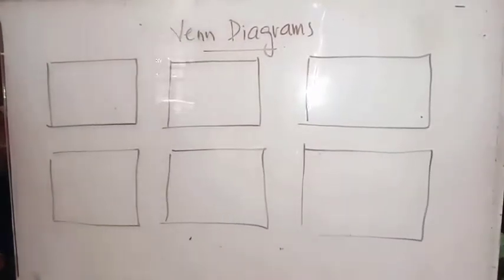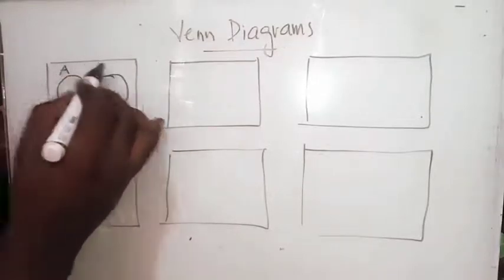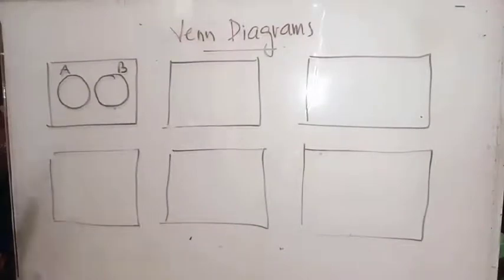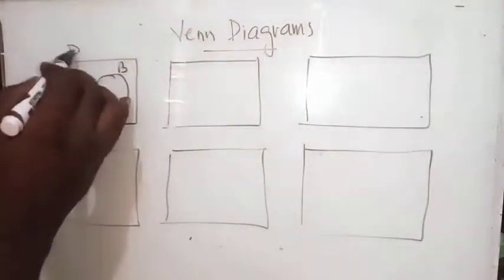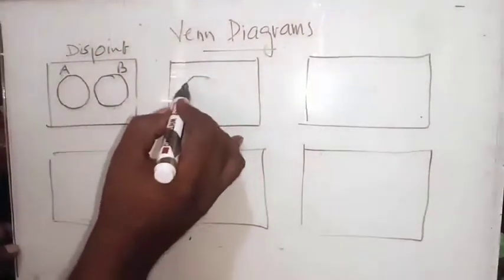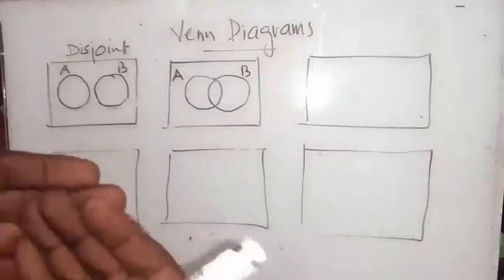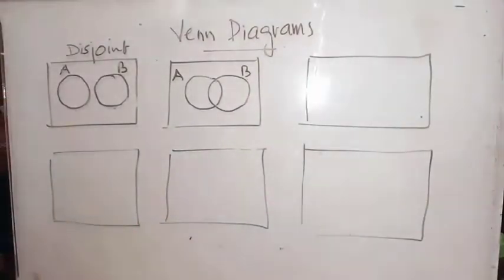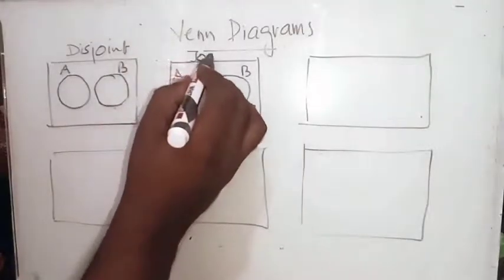If we have two sets, let's see how to draw them. Suppose we have sets A and B that are not meeting each other — the circles are separate and not joining. This is the representation of disjoint sets. On the other hand, if the diagrams are overlapping, you can call those sets joint sets.